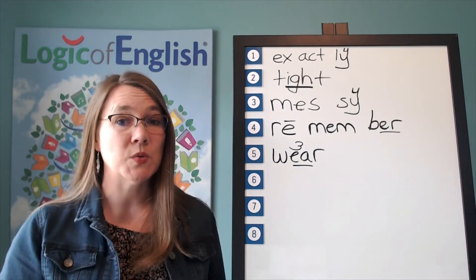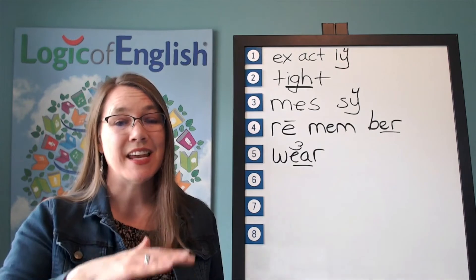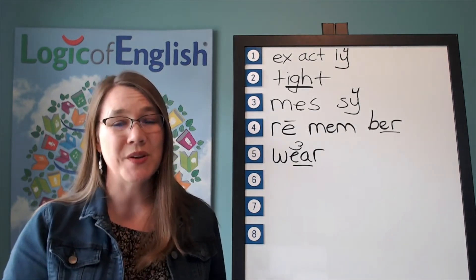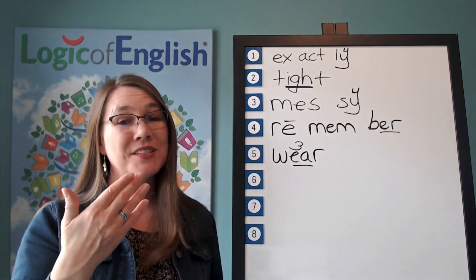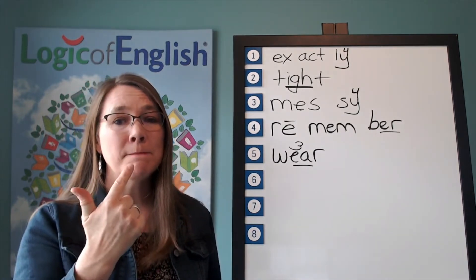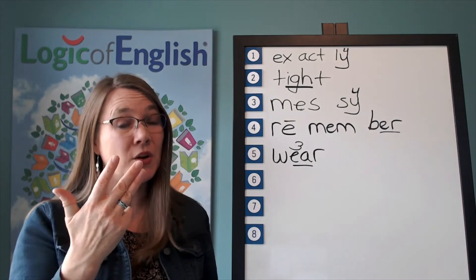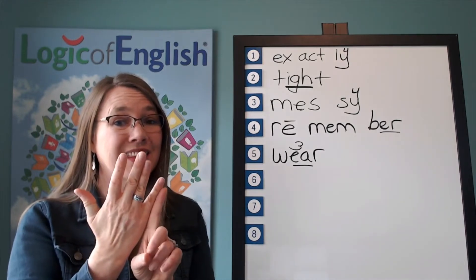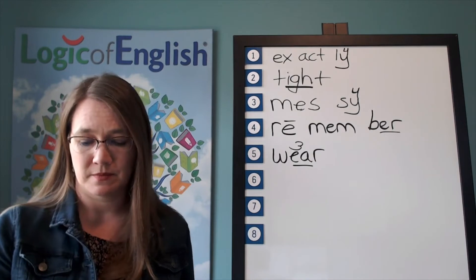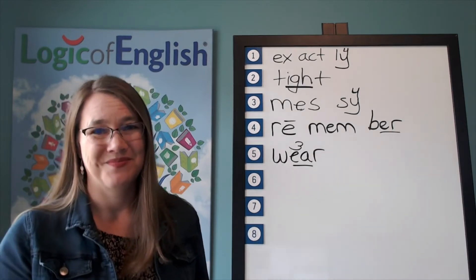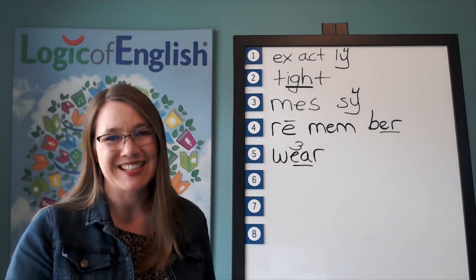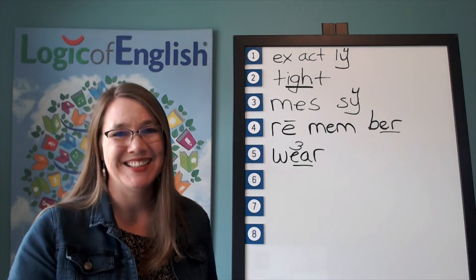The next word is smooth. The table was sanded very smooth. Smooth. Go ahead and say smooth. Let's sound it out. S, mm, OO — use an OO — S. Go ahead and write smooth. Smooth. Good.